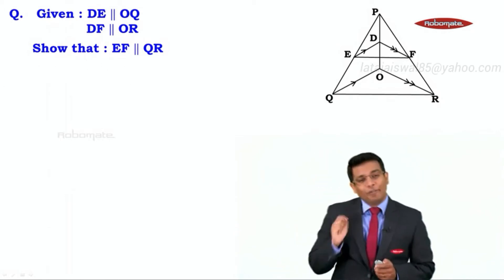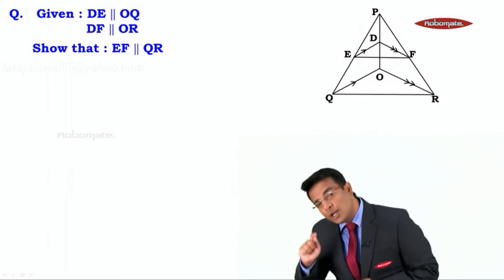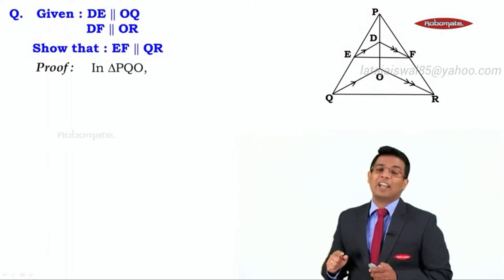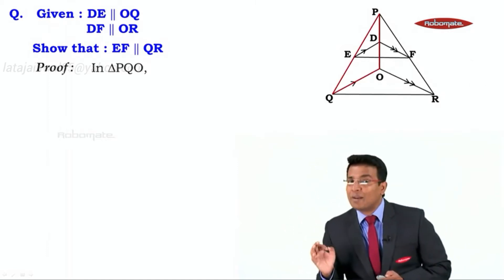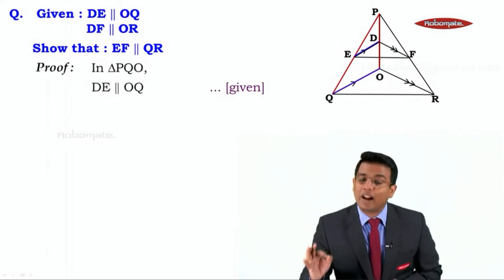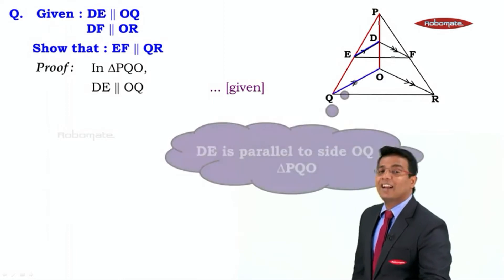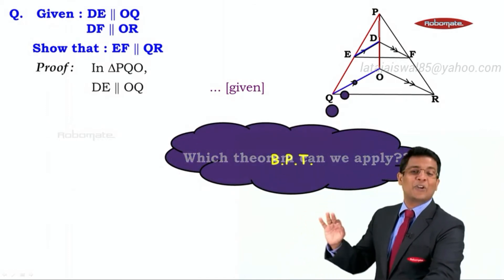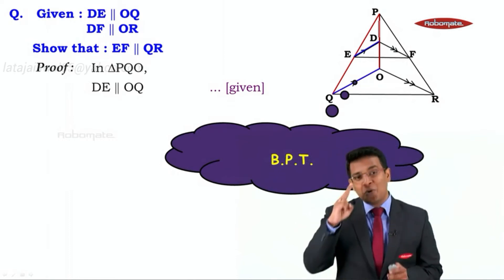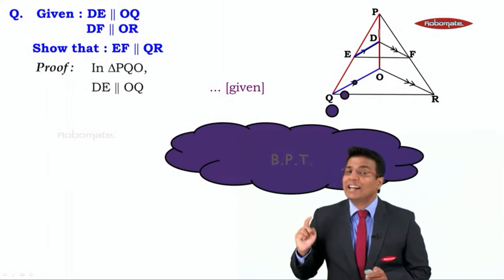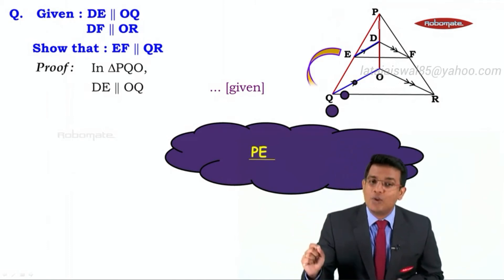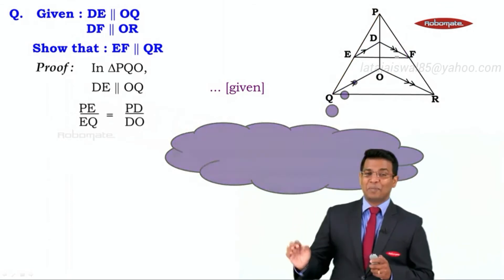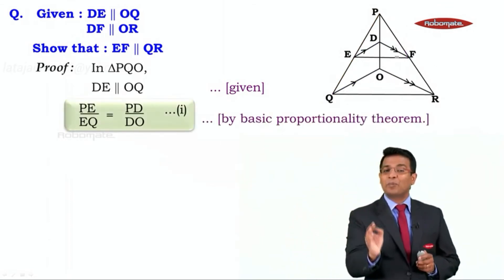Let's try to get that now. To get PE upon EQ, we use the first given: DE is parallel to OQ, which happens in triangle POQ. In triangle POQ, DE is parallel to side OQ. So which theorem can we apply here? It is going to be BPT. Applying BPT, we get PE upon EQ equal to PD upon DO. This is our statement number one, by the Basic Proportionality Theorem.